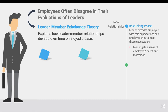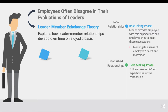In this stage, the leader gets a sense of the employee's talents and motivations — trying to figure out what the employee is doing, how they're doing, if they're a good employee or not. Over time, once relationships become established, they start to move out of the role-taking phase and into the role-making phase. Rather than the leader being the one that sets up all of the expectations, we start to see more of an exchange occurring where the follower is able to voice their expectations for the relationship.